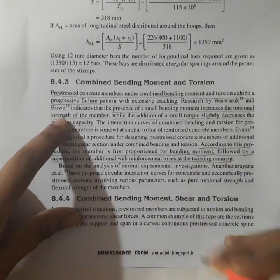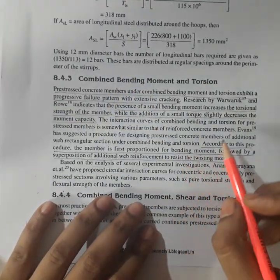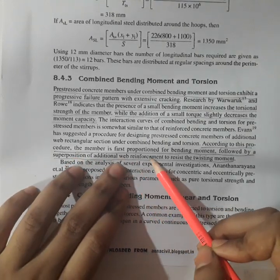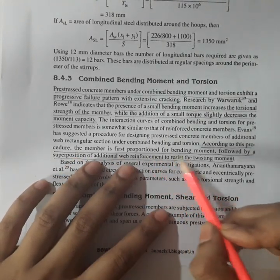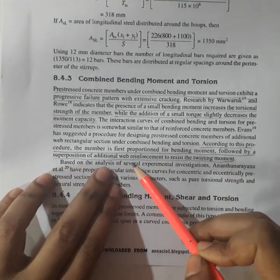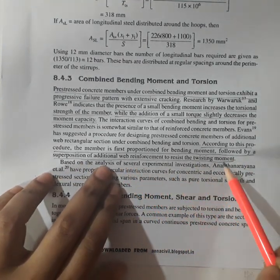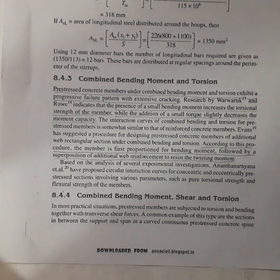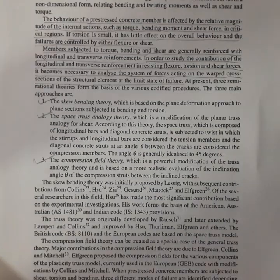There are also some other studies. According to this procedure, the member is first proportioned for bending moment followed by the superposition of additional web reinforcement to resist the twisting moment. These are some studies which have already been adopted before designing this prestressed concrete beam for shear resistance and the torsional resistance.